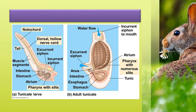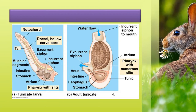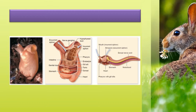Coelom is absent; an atrial cavity is present surrounding the pharynx. Notochord is present in the tail region of the larval stage alone; they degenerate and are absent in the adult. Alimentary canal is complete and circulatory system is of open type. Dorsal tubular nerve cord is present only in the larval stage, and a single ganglion is present on the dorsal side. Mostly they are hermaphrodite and development is indirect, having a free-swimming tadpole larva with chordate characteristic features, followed by retrogressive metamorphosis in the adult.